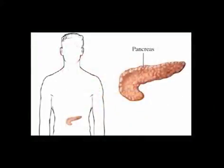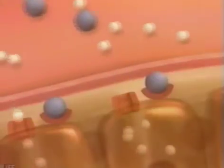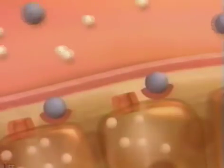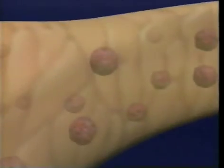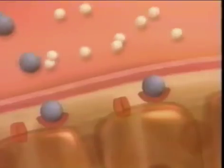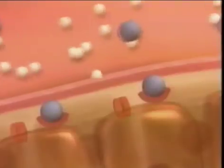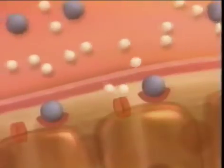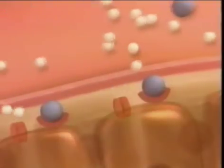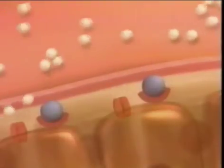Normally, with the help of insulin, a hormone made by the pancreas, this sugar is moved from the bloodstream into the body's cells where it can be used for energy. If the pancreas does not make enough insulin or the body doesn't respond well to the insulin it has, sugar builds up in the bloodstream. When these sugar levels reach a certain level, one is said to have type 2 diabetes.